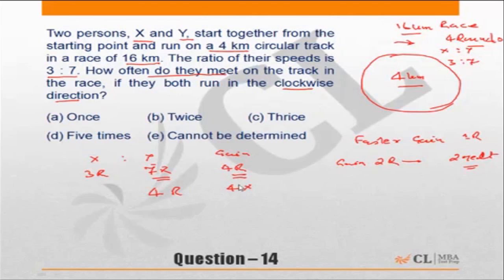times 4 by 7, or the gain will be 16/7 rounds, which is 7 twos of 14, approximately 2.3 rounds. So when Y has completed the race, which means he has done